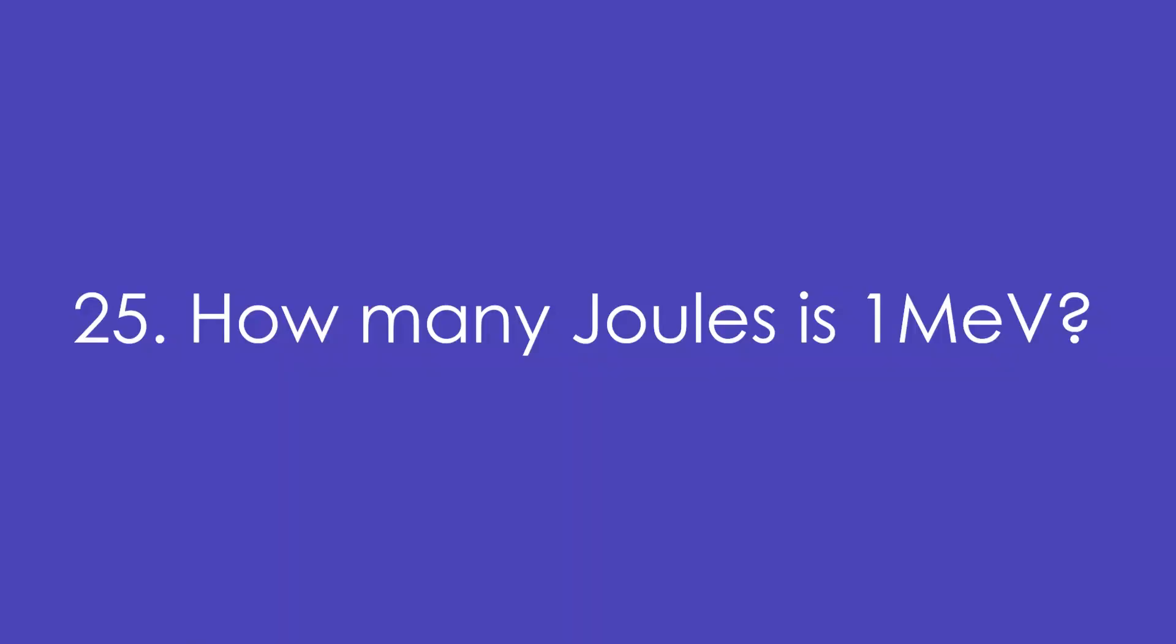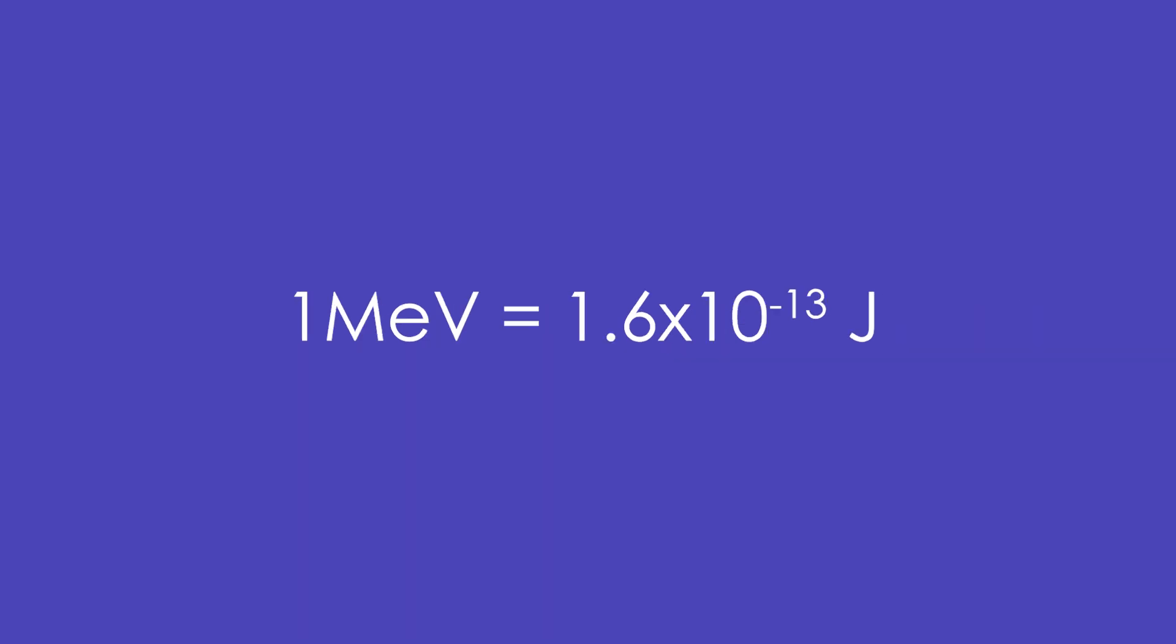25. How many joules is 1 mega electron volt? Instead of messing around with powers of 10, it's handy to remember that 1 mega electron volt is 1.6 times 10 to the minus 13 joules. We deal with mega electron volts a lot.